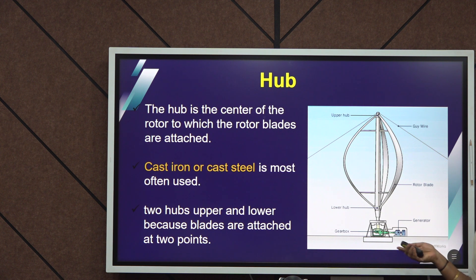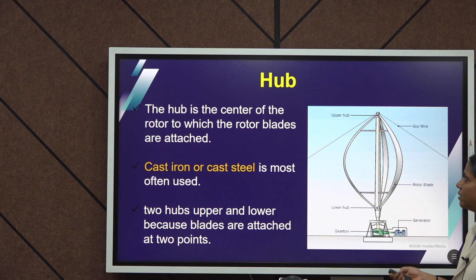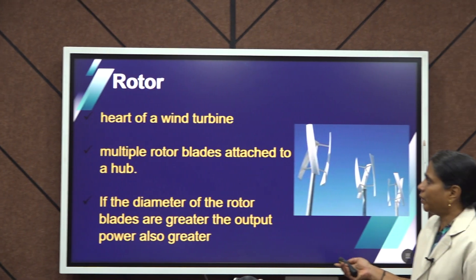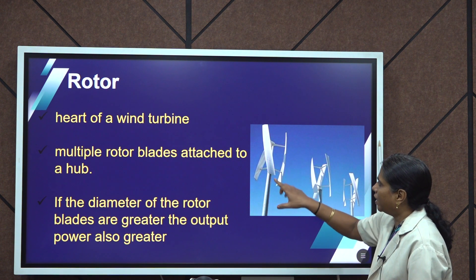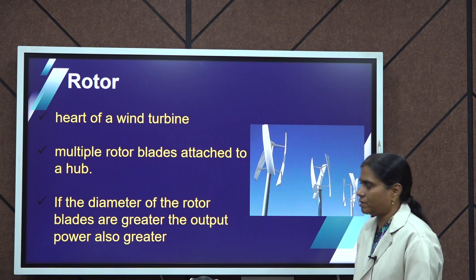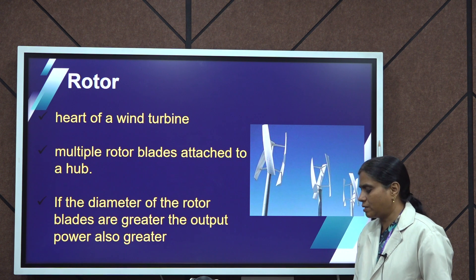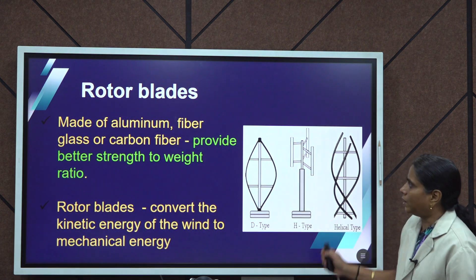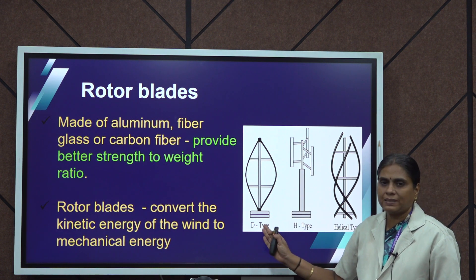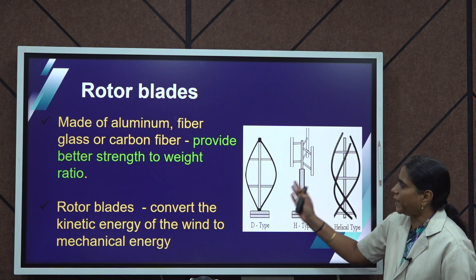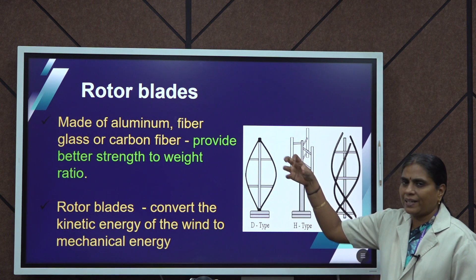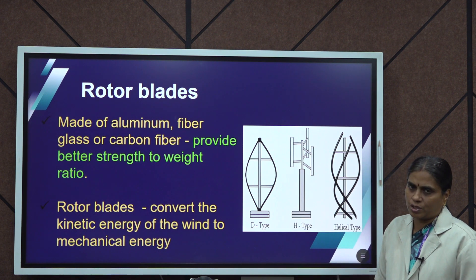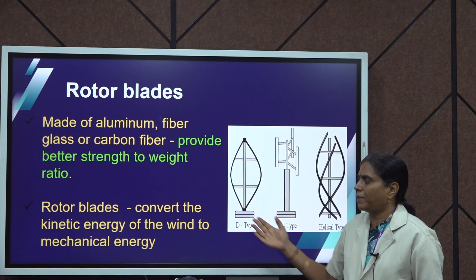The hub is made up of either cast iron or cast steel and has two hubs — lower and upper — which are the main structural portions of this vertical axis wind turbine. The rotor is the heart of the wind turbine, having multiple rotor blades attached to the hub. As the diameter of the rotor increases, its efficiency also increases. The rotor blades can be of three different types: D-type, H-type, and helical type, made up of aluminium, fiberglass, or carbon fiber. They convert the kinetic energy of the wind into mechanical energy, which is then converted into electrical energy by the generator.